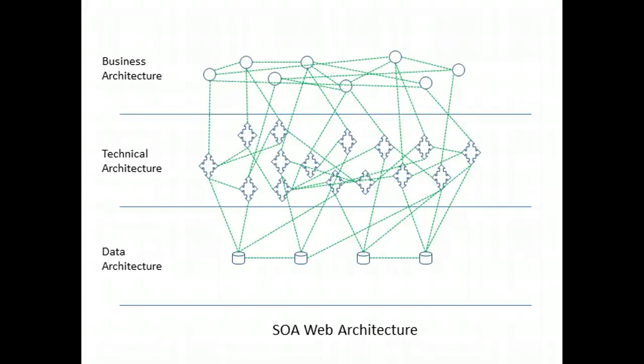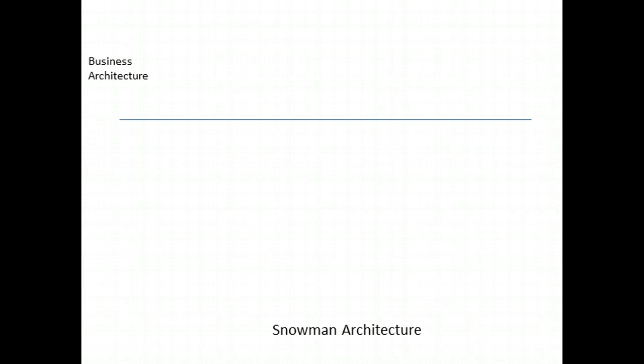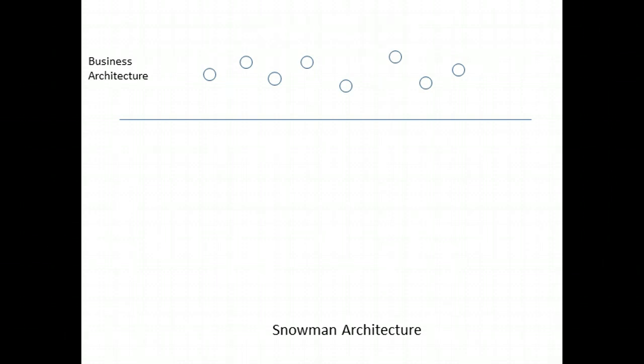Notice that some rather fuzzy horizontal boundaries separate the three architectural levels. The snowman architecture starts out looking like the SOA web architecture in that we begin the design by identifying the business functions. But very quickly, the snowman architecture diverges from the SOA web architecture.